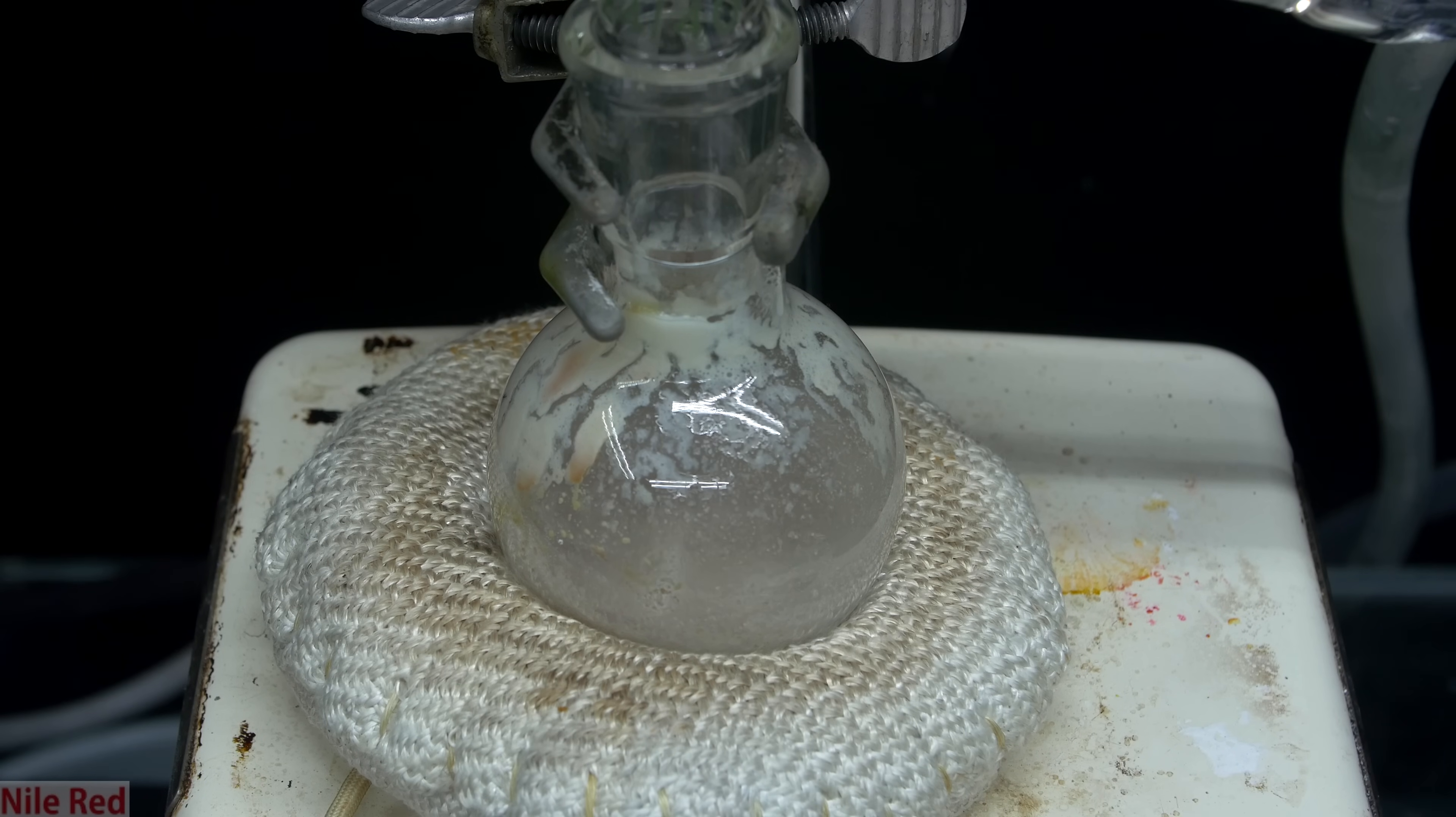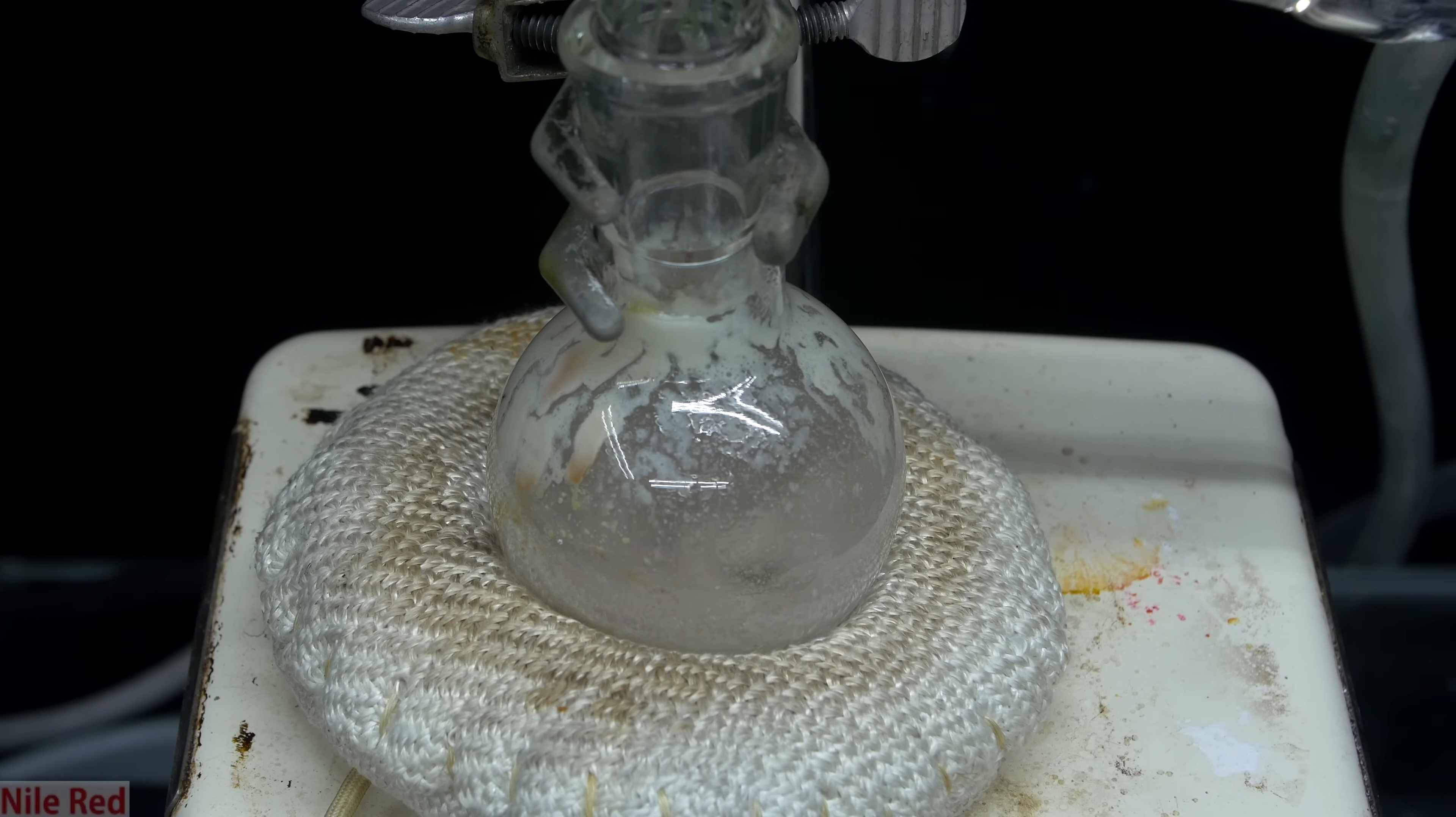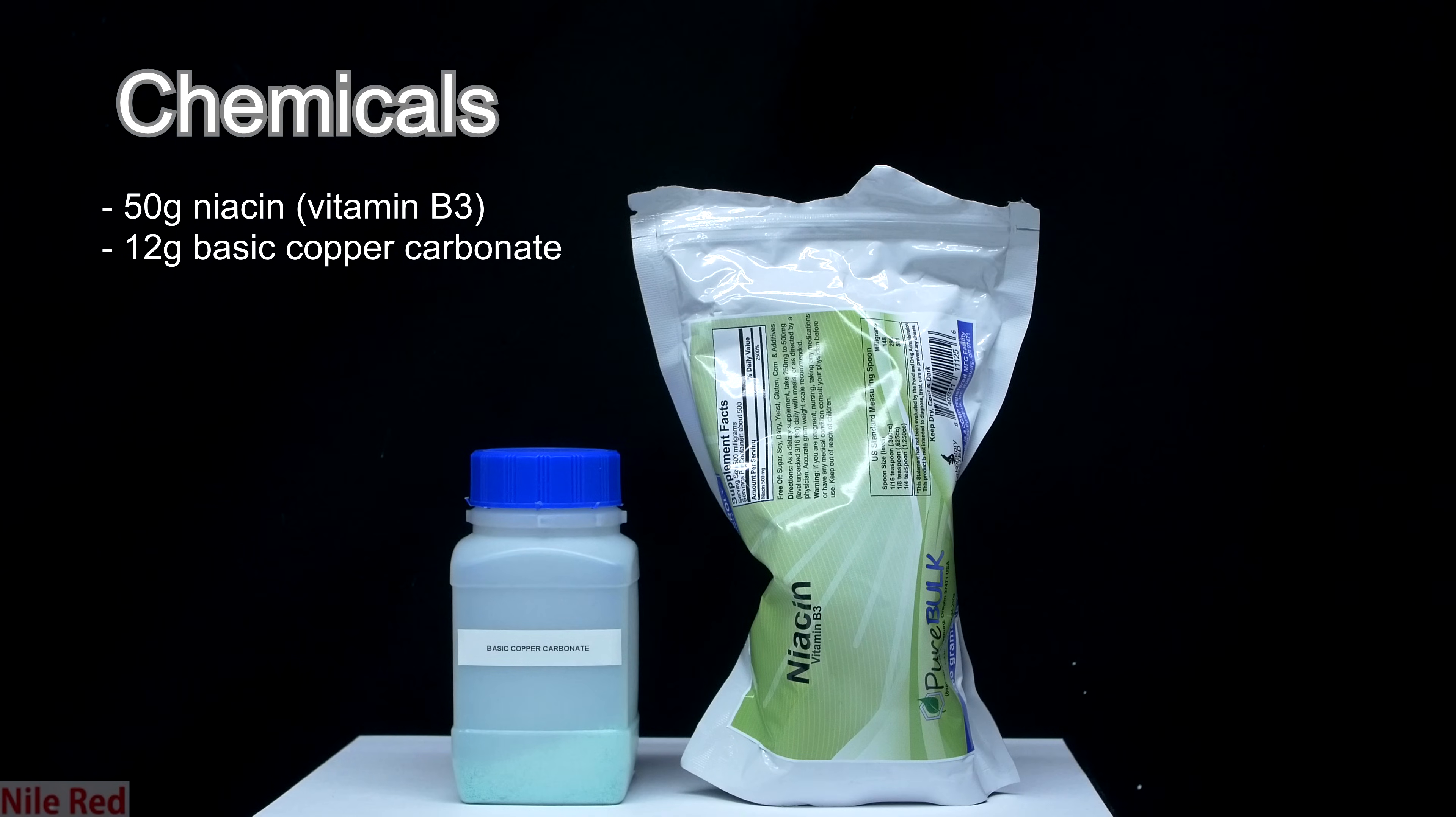To make it, we're going to be carrying out what's known as a decarboxylation reaction on something called niacin. To make our pyridine, we effectively just need two things: some basic copper carbonate and niacin. Both the basic copper carbonate and the niacin have been obtained from previous videos, but for the run in this video, I have to use store-bought niacin because I used up all of the niacin that I had in test runs.